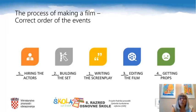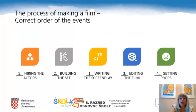The correct order of the events in the process of making a film is: first, writing the screenplay; second, building the set; third, editing the film; fourth, getting props; and fifth, hiring the actors.